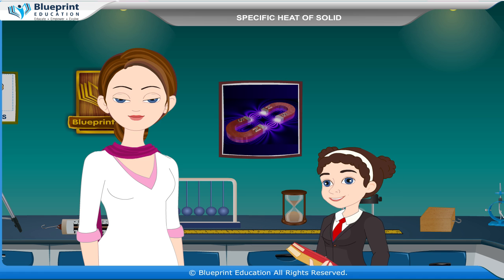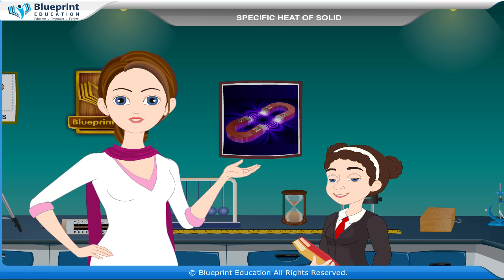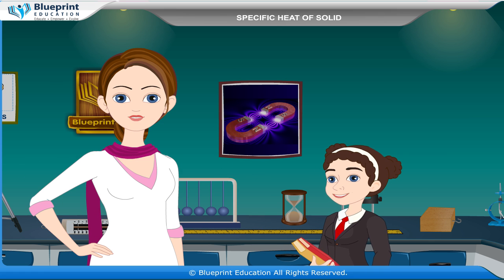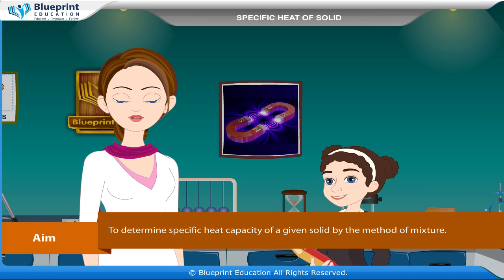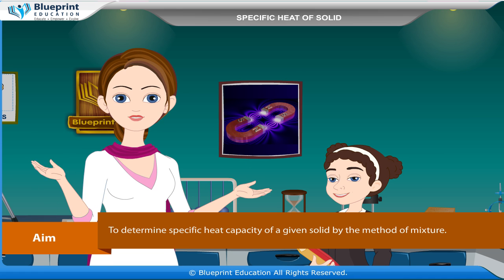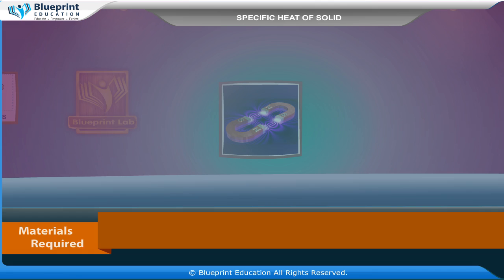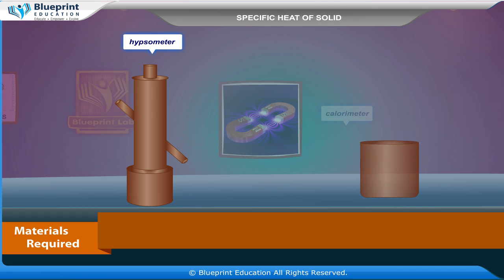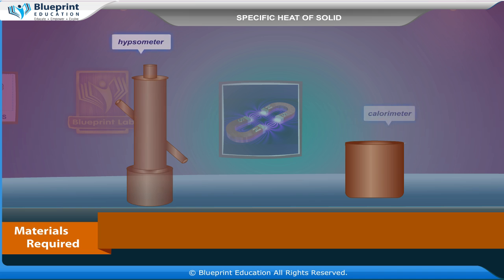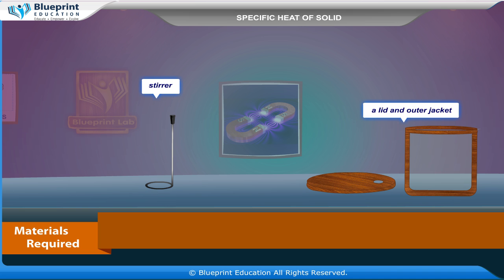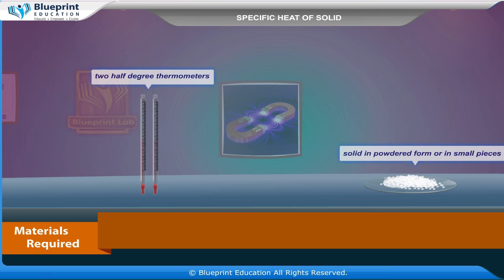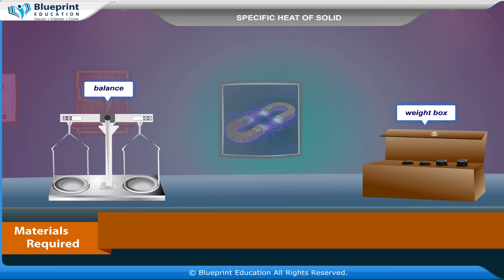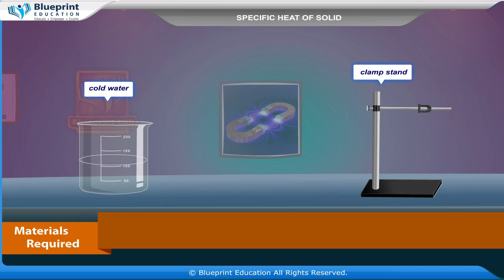Let's do an experiment to determine specific heat capacity of a given solid by the method of mixture. Materials required are: a hypsometer, calorimeter, stirrer, a lid, an outer jacket, two half-degree thermometers, given solid in powdered form or in small pieces, balance, weight box, cold water, and clamp stand.